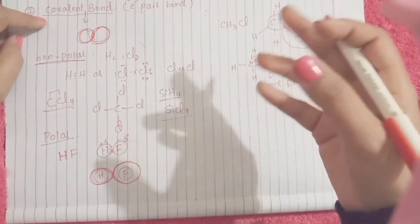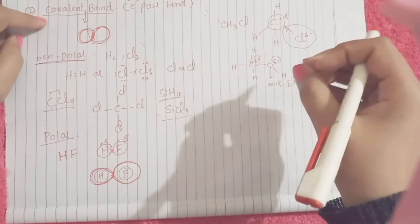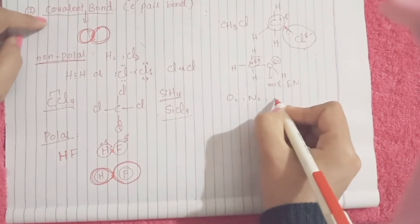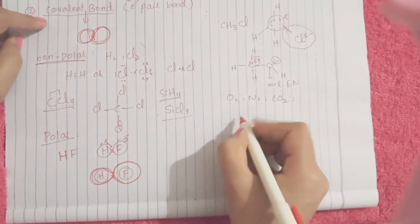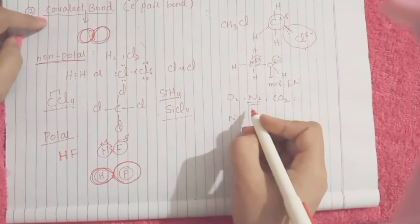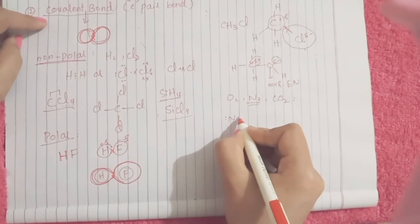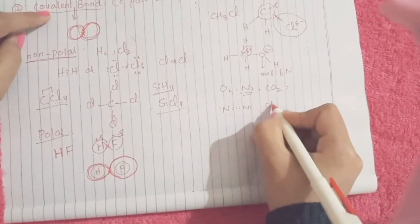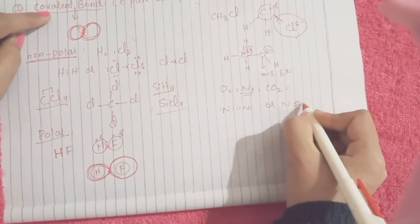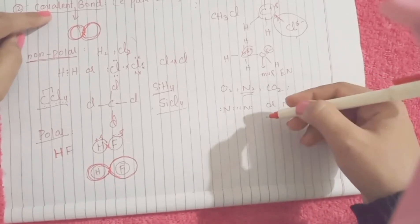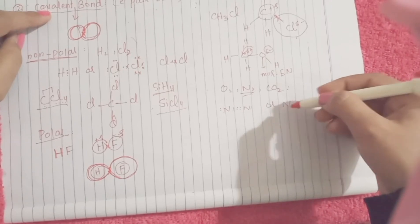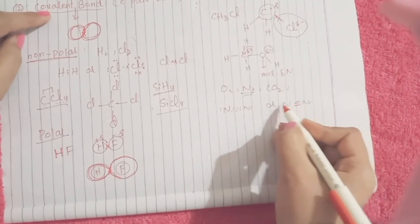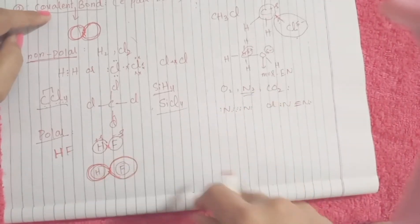An atom can share more than one electron pair to form what is called a double or triple bond. Examples are O₂, N₂, and carbon dioxide. In the nitrogen molecule, nitrogen shares three bond pairs with its neighboring nitrogen atom, forming a triple bond. If it is sharing only one electron pair, a single bond is formed; if sharing two electron pairs, a double bond; and if sharing three electron pairs, a triple bond is formed between the elements.